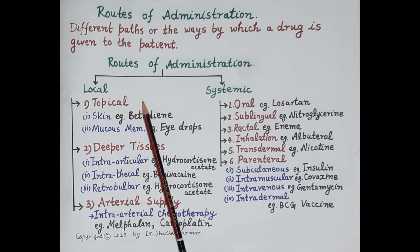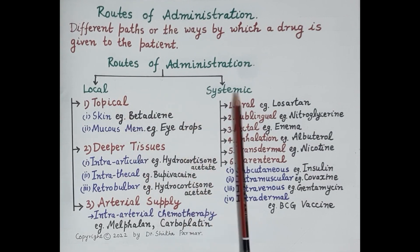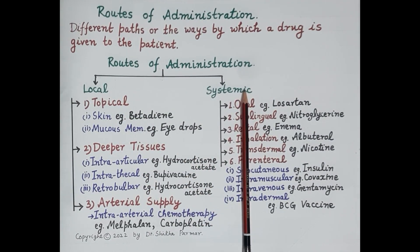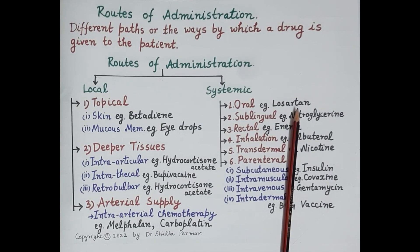The second broad division is the systemic route. Unlike local routes, in the systemic route the drug is absorbed into the blood and produces its effect throughout the body. The first and most important systemic route is the oral route, also called the enteral route, referring to the gastrointestinal tract. The drug is taken by mouth, swallowed, reaches the GI tract, and is absorbed into the blood from the gut or small intestine. For example, losartan, an anti-hypertensive drug, is administered orally to reduce blood pressure.